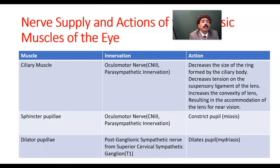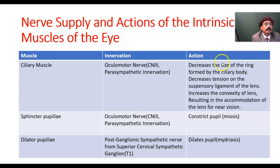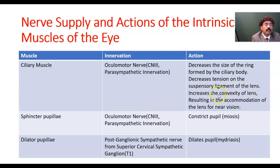Now I will go to the nerve supply and actions of the intrinsic muscles of the eye. The ciliary muscle is supplied by the oculomotor nerve, that is the third cranial nerve, and this innervation is parasympathetic. The action of the ciliary muscle: it decreases the size of the ring formed by the ciliary body, decreases the tension on the suspensory ligament of the lens, and increases the convexity of the lens, resulting in accommodation of the lens for near vision.